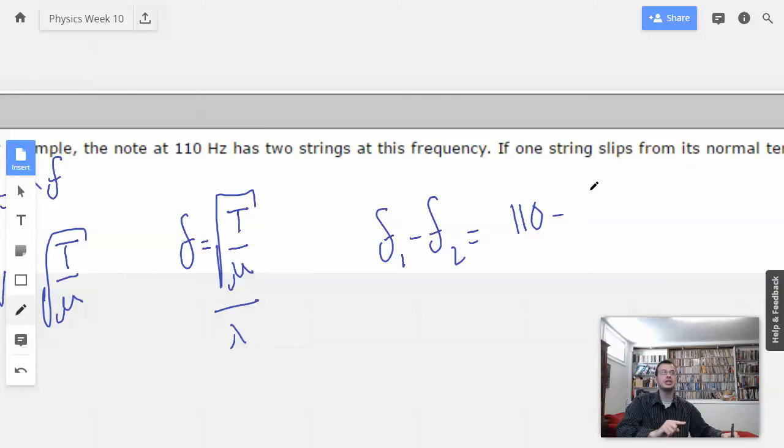And we know that tension on two is going to be tension, which is 575, divided by mu, but we don't know what mu is. But we might.